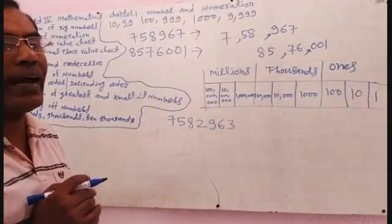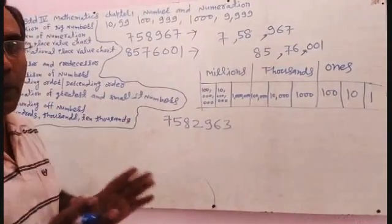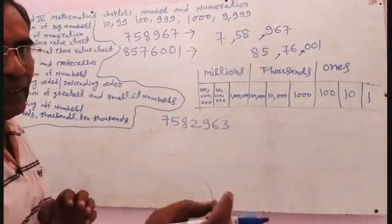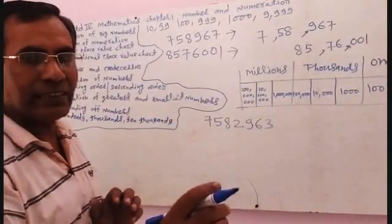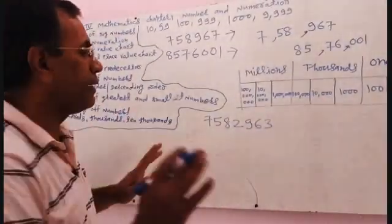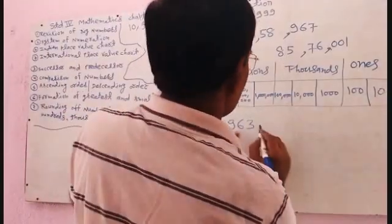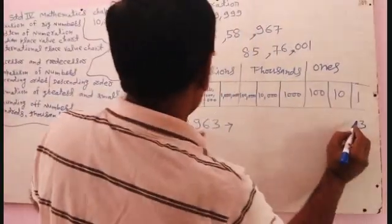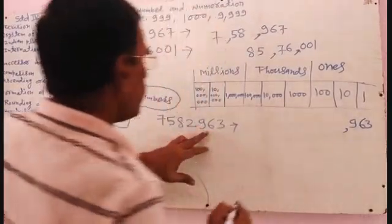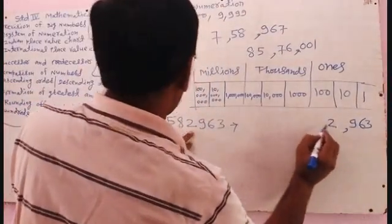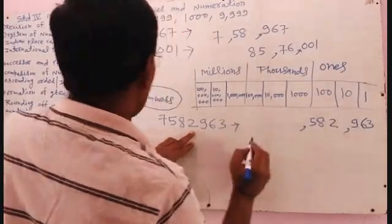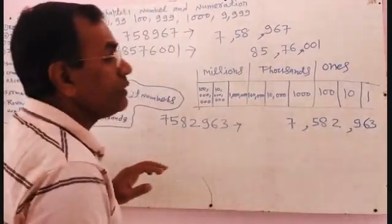Starting from the right side, write three digits: 3, 6, 9. Then give a comma, then three digits: 2, 8, 5. Then a comma, then the remaining digits: 8, then 7. It means 7 is millions, then 8 and 5 is ten-thousands and thousands, and 3, 6, 9 is ones, tens, hundreds.